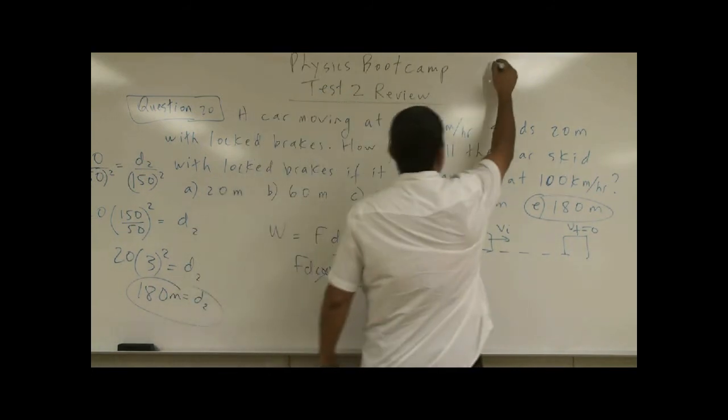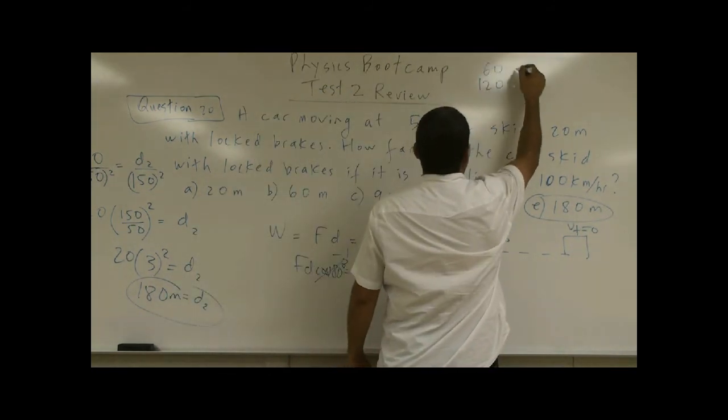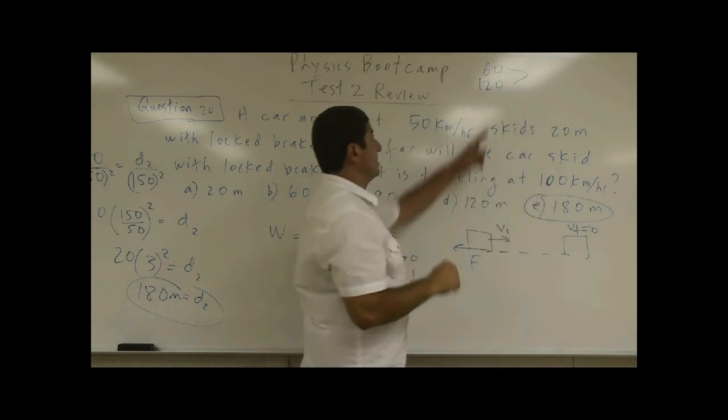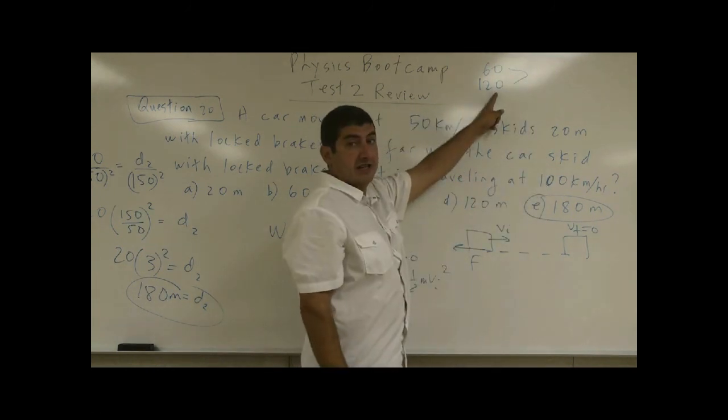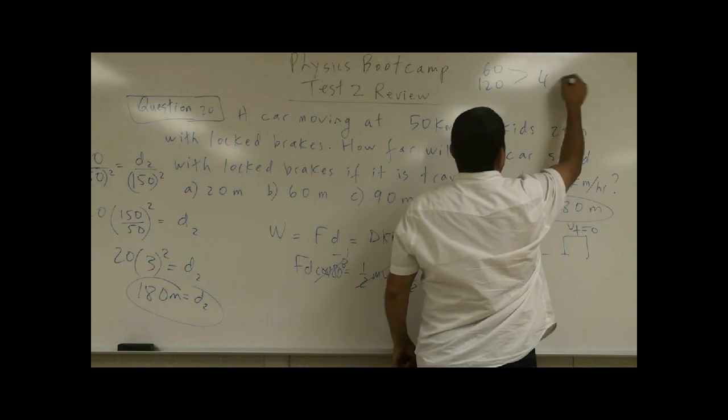So from 60 to 120, what's going to happen to your stopping distance? Well, that's double the velocity, stopping distance four times as much. Right? 4D.